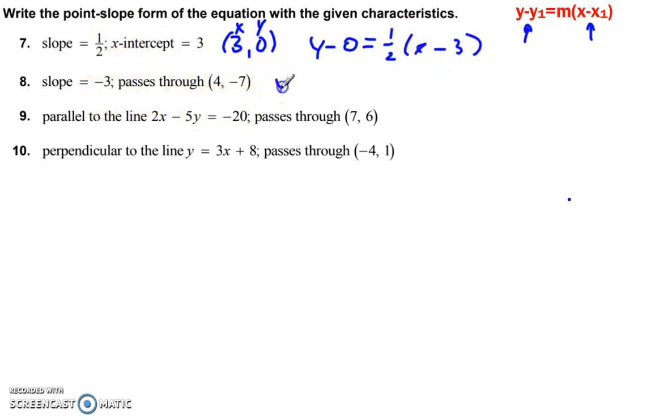Slope passes through this. So y minus. Label your coordinates. X and y. Negative 7. Makes that plus 7. Is equal to negative 3 times x minus 4. That was easy. Moving on.